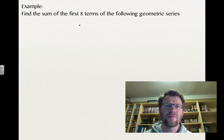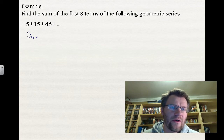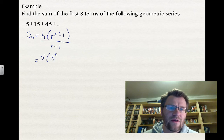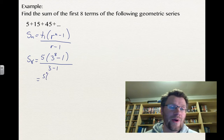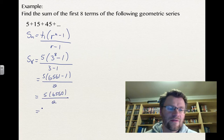Example 1: Find the sum of the first eight terms of the geometric series 5 plus 15 plus 45 plus …. Using our formula Sn = T₁(rⁿ − 1)/(r − 1), our first term T₁ is 5, our ratio r is 3, and n is 8. So S₈ = 5·(3⁸ − 1)/(3 − 1). Since 3⁸ equals 6,561, we get 5·(6,560)/2, which equals 5 times 3,280, giving a final answer of 16,400.